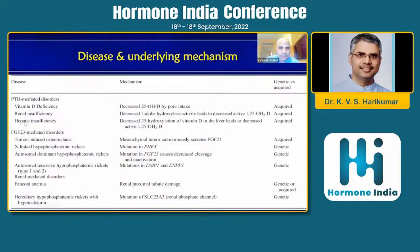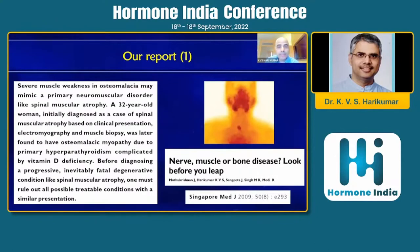One of our patients who was labeled as spinal muscular atrophy and told nothing could be done was actually an osteomalacia myopathy due to a simple primary hyperparathyroidism. So before you label somebody with an irreversible disease for which there is no remedy, we should all screen for metabolic bone disease, because most of them are 100% amenable to therapies and the improvement is remarkable.